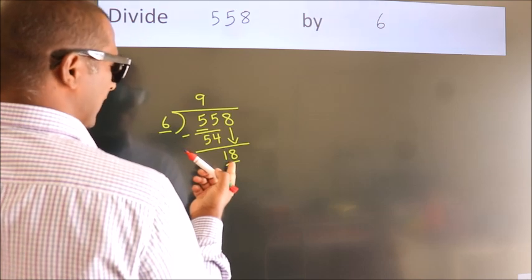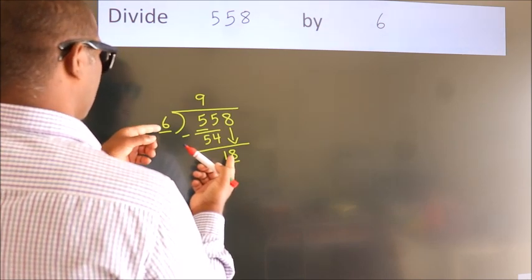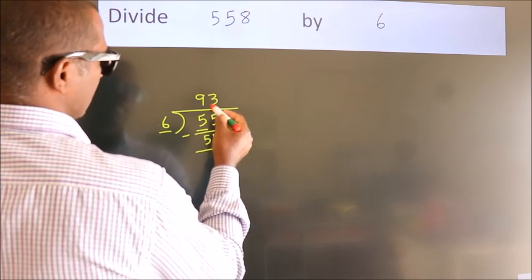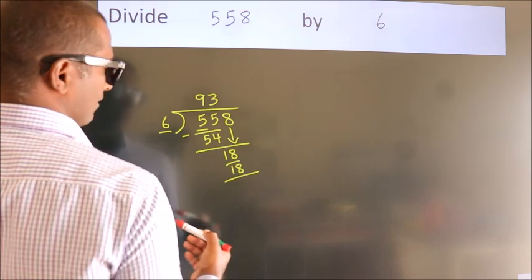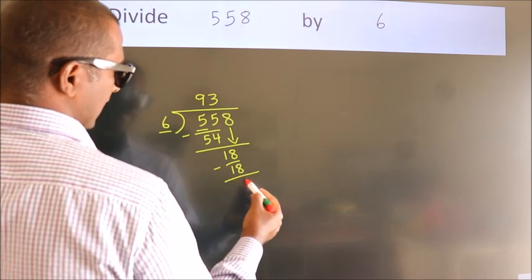When do we get 18? In the 6 table, 6 threes is 18. Now we subtract. We get 0.